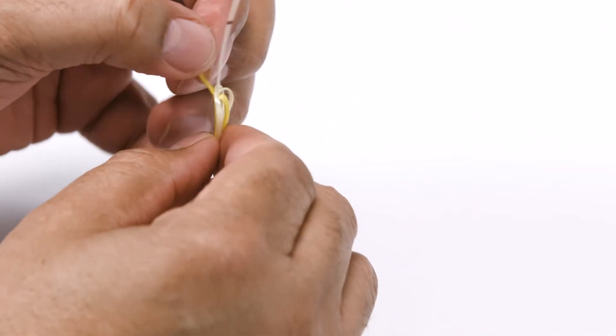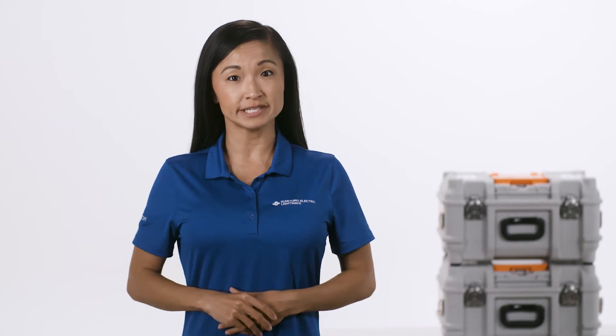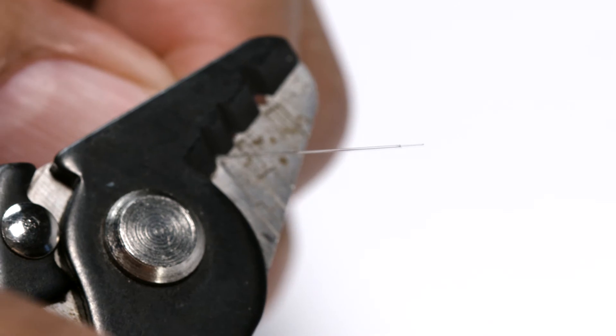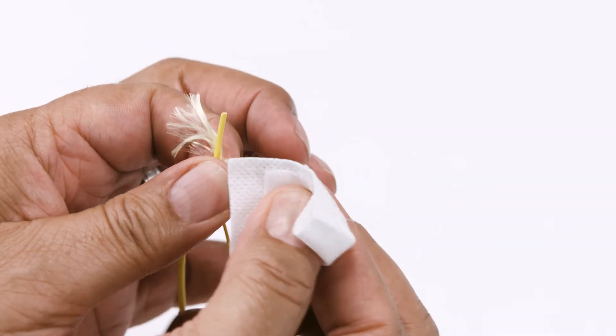Now let's prepare the fiber. Fiber preparation includes four orderly steps. Stripping the fiber. Cleaning the stripped fiber.